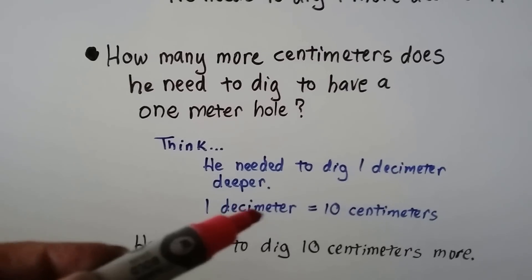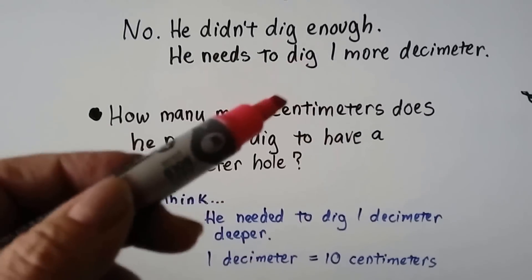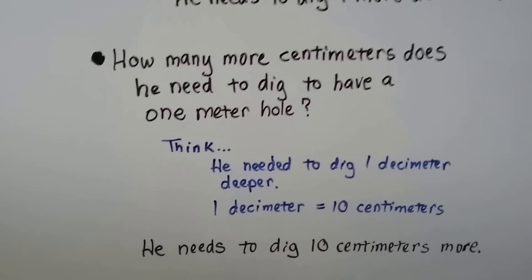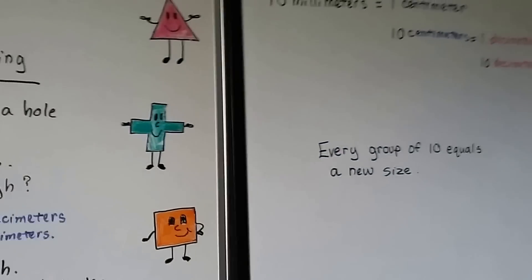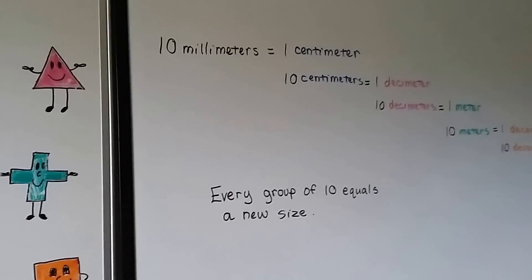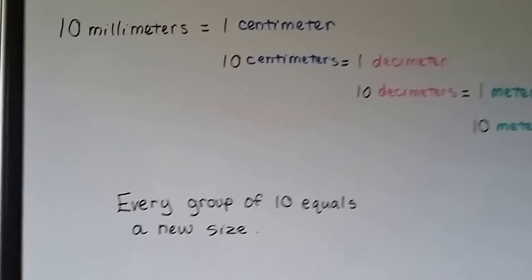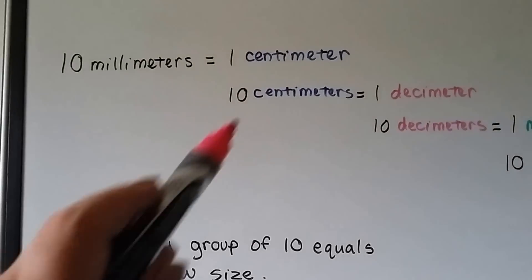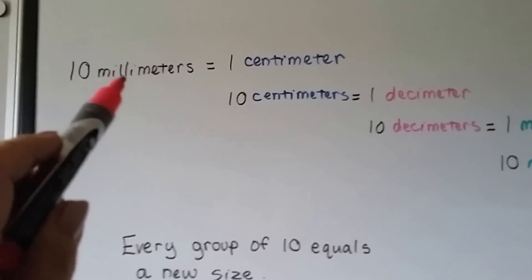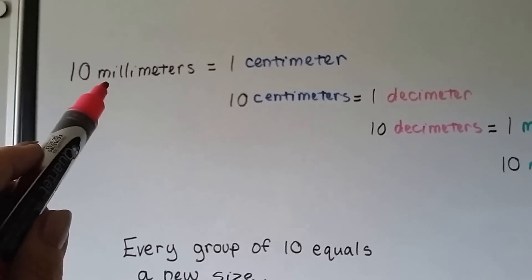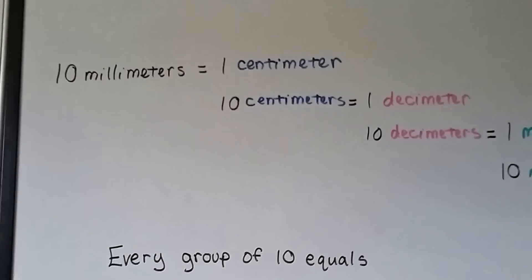We can convert the increments to each other. Remember I said that it is based off of groups of 10? Well, each group of 10 equals a new size. If we go smaller than a centimeter, we're in millimeters. And 10 tiny little millimeters equals one centimeter.